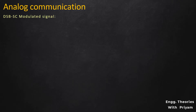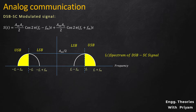The DSB-SC modulated signal has both upper and lower sidebands. When we use the bandpass filter to recover the upper sideband, a part of the lower sideband also gets selected due to the lack of sharpness in the bandpass filter. Similarly, when we try to recover only the lower sideband, a part of the upper sideband also gets selected. Due to this, we cannot properly recover either of the sidebands.